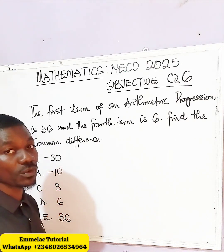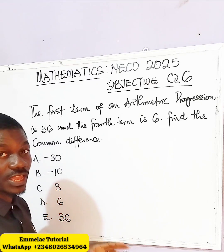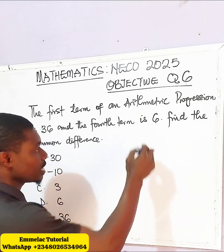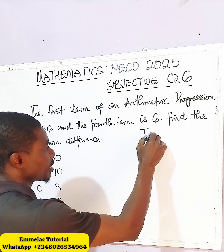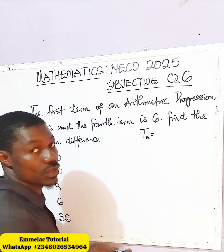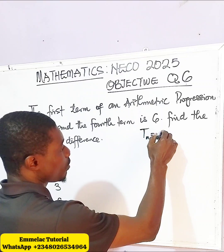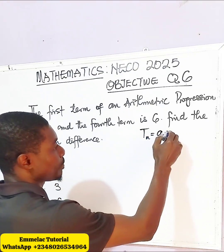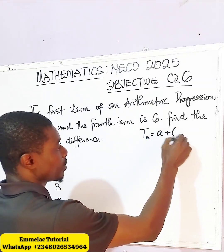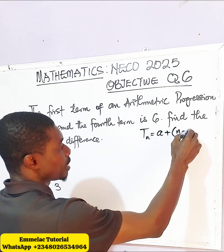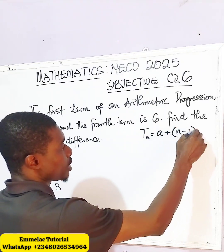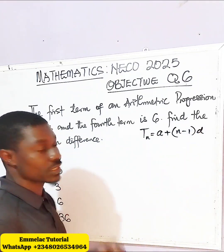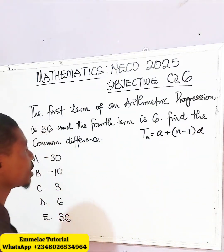First of all, let us recall the formula for AP, which is arithmetic progression. It states that any given term equals the sum of the first term and the product of N minus 1 times the common difference.